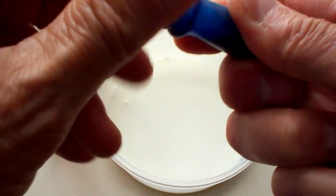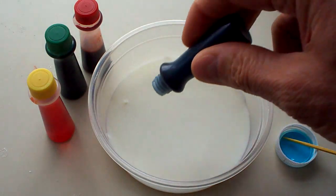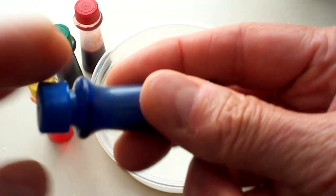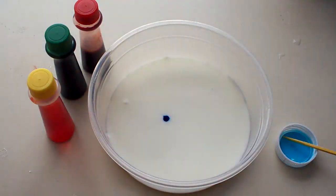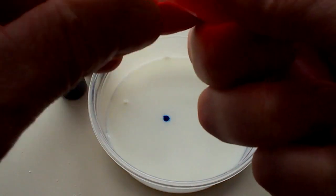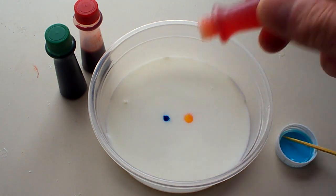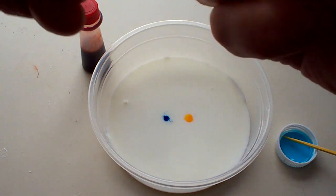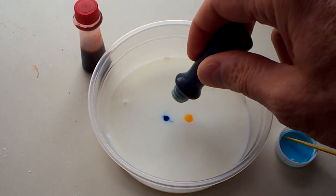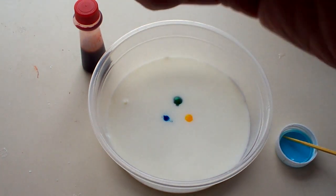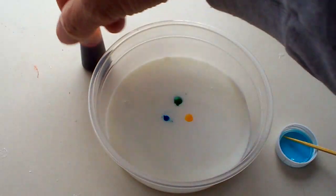What we're going to do is put one drop of each color of food coloring very carefully on the surface. We don't want them to move around. We want them to sit there like little colored islands. I'm putting them towards the center: drop of yellow, drop of green, and a drop of red.